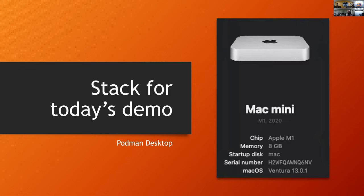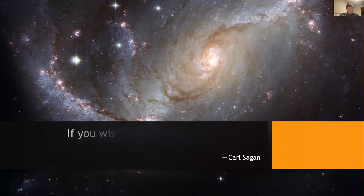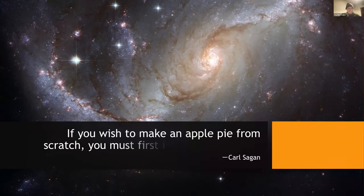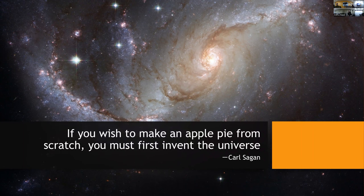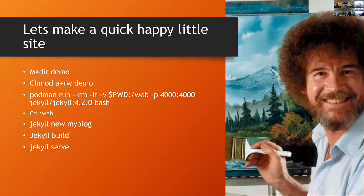Of course, what would a talk be without a Carl Sagan quote: 'If you wish to make an apple pie from scratch, you must first invent the universe.' So let's make a quick happy little site — really all we're going to do is just spin up Jekyll, tell it to make a new site, build it, and serve it. Nothing earth-shatteringly crazy.